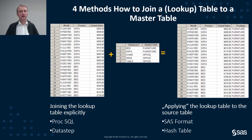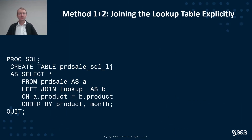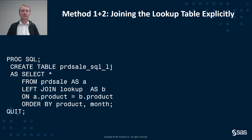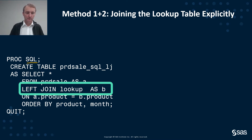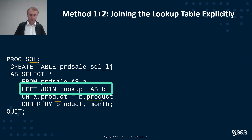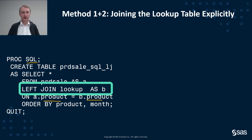Let's look more specifically at how these examples work, starting with method one and two. Method one and two is, as already said, joining the lookup table explicitly to the larger data. For method one, we take an SQL approach and say we would like to do a left join of the lookup table to our larger table — a left join on the keys which we use to identify the join condition and determine which records should be matched with each other.